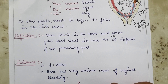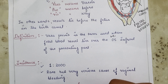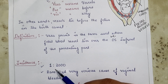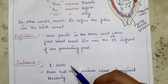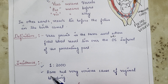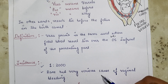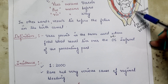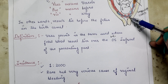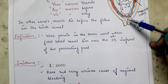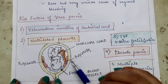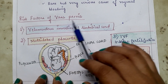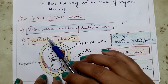The incidence of Vasa Previa is actually very rare — that is one in two thousand pregnancies. Although its incidence is rare, it is a very serious cause of vaginal bleeding, as these fetal blood vessels are at risk of rupture, which might lead to bleeding.